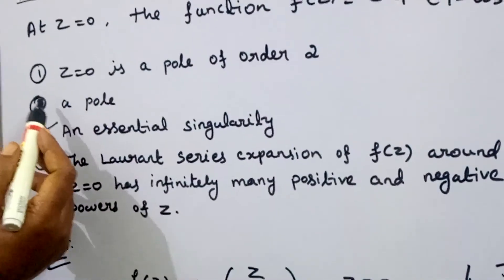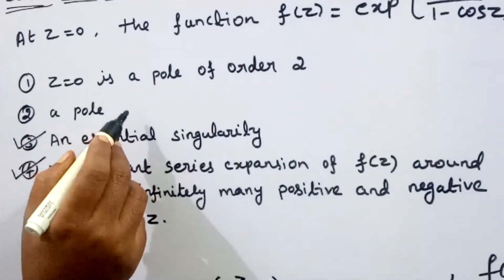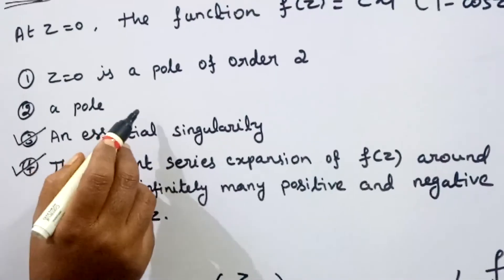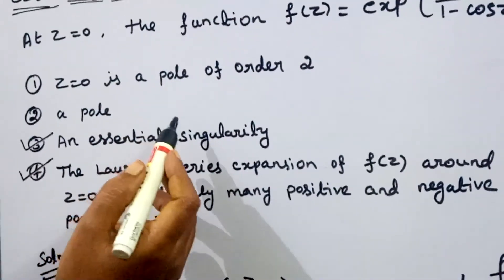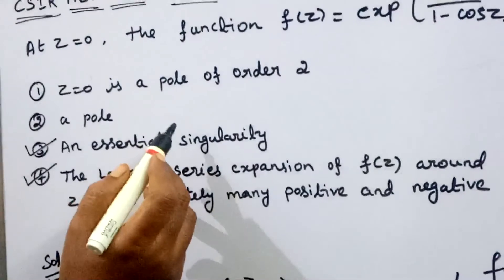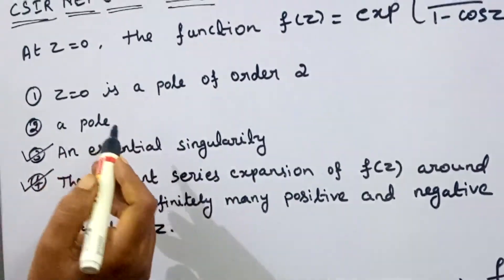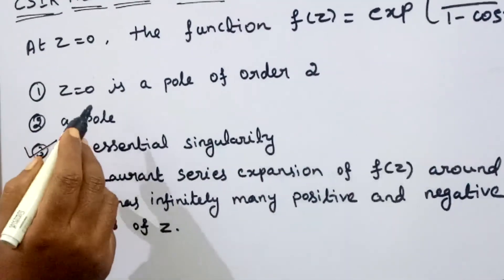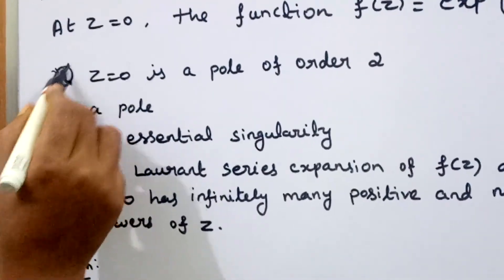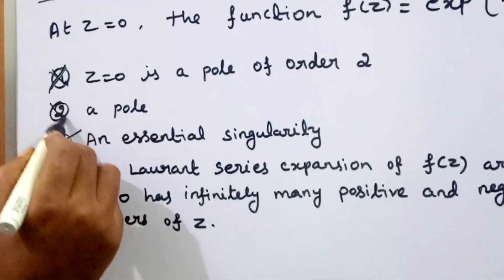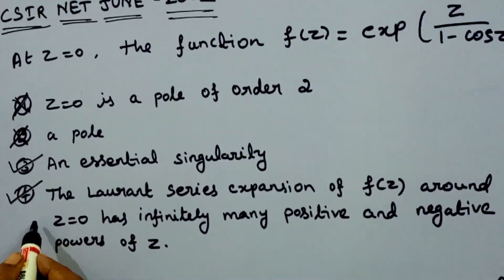The first option states z equal to 0 is a pole of order 2. That would require the negative powers of z to be a finite number of terms. So if z equal to 0 were a pole of order 2, the first option would be correct; however, since we have infinitely many negative powers, it is not. The second option is also not correct. The third and fourth options are correct.